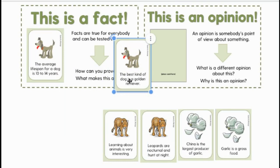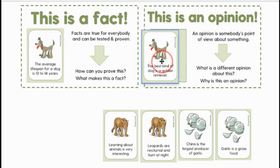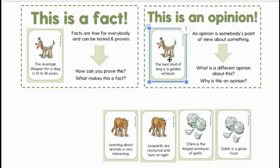The best kind of dog is a golden retriever. I don't have a golden retriever, so I don't think this is true — so this is an opinion. Somebody thinks that golden retrievers are the best kind of dog, but maybe you don't. Maybe you like a bulldog or any other dog. I know Valentina would like her petunia!